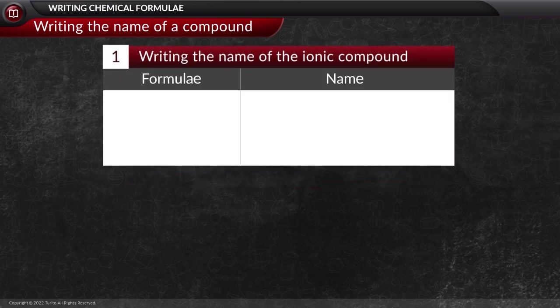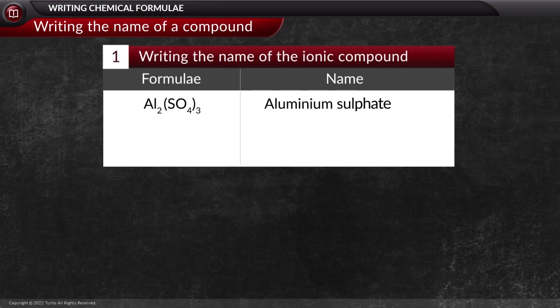For example, let us consider there is an aluminum and sulfate group in a compound. This implies that the name is aluminum sulfate.